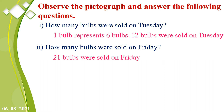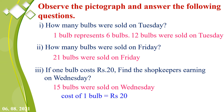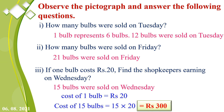Third: if 1 bulb costs rupees 20, find the shopkeeper's earning on Wednesday. On Wednesday there are 2 and a half bulbs. 2 into 6 equals 12, and 12 plus 3 is 15 — so 15 bulbs were sold on Wednesday. The cost of 15 bulbs: 15 into 20 equals rupees 300.